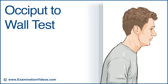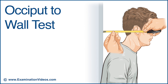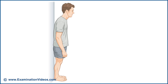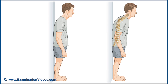A similar test, called the occiput to wall test, measures the distance between the back of the skull and the wall. Please note that the inability to touch the skull against the wall may be due to other causes of reduced extension in the cervical spine. In addition, patients who have an increased thoracic kyphosis will also have difficulty in touching their skull to the wall, even though their cervical range of motion may be normal.